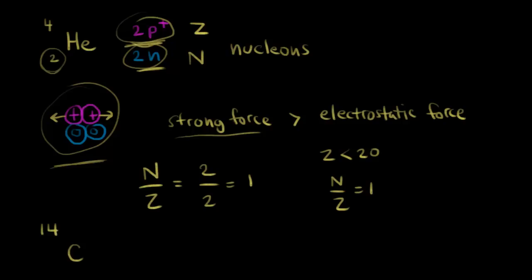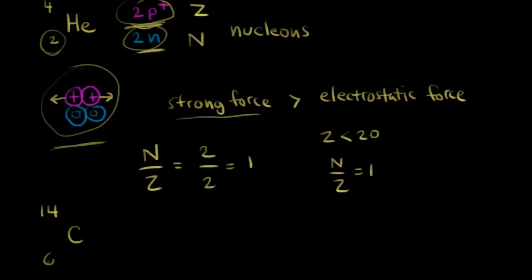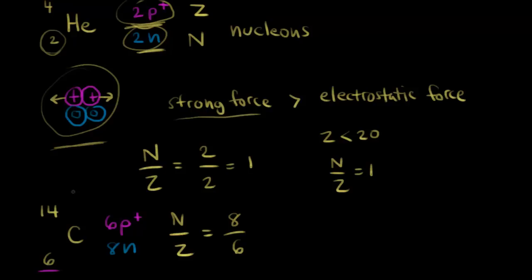Let's look at carbon-14 next. Carbon-14 has an atomic number of six, so there are six protons in the nucleus. The number of neutrons is 14 minus six, which gives eight neutrons. The N to Z ratio is eight over six, which is greater than one. So we have an unstable nucleus — carbon-14 is radioactive and is going to undergo spontaneous decay to try to get a better neutron-to-proton ratio.